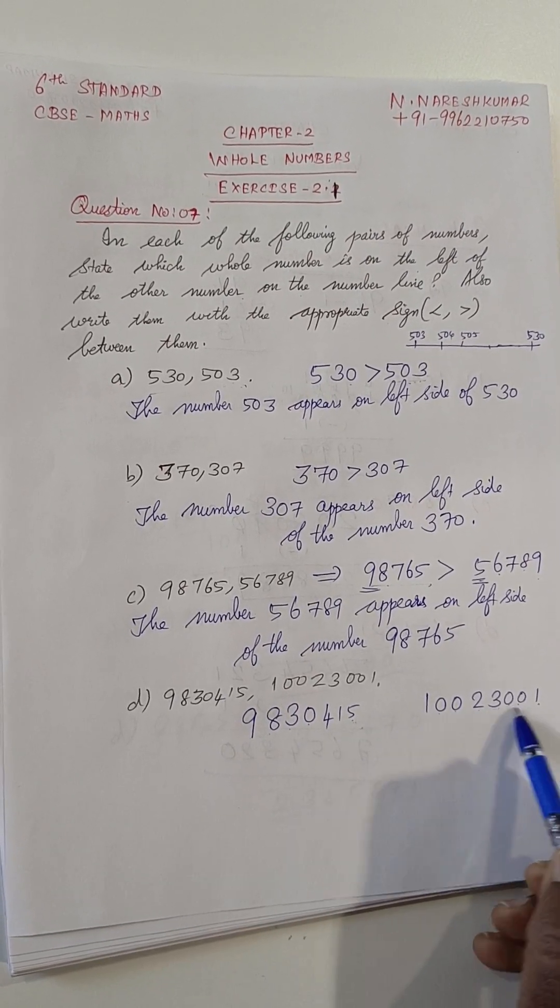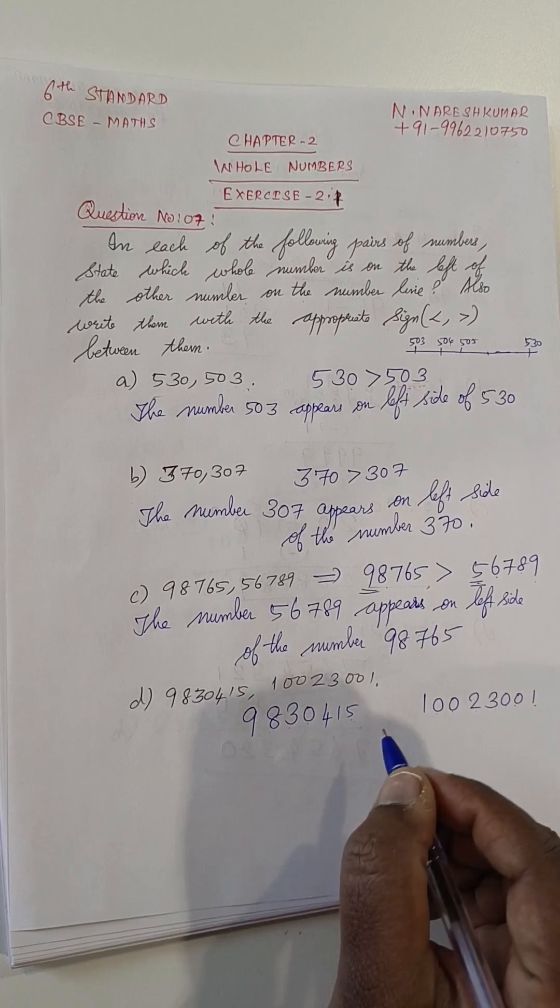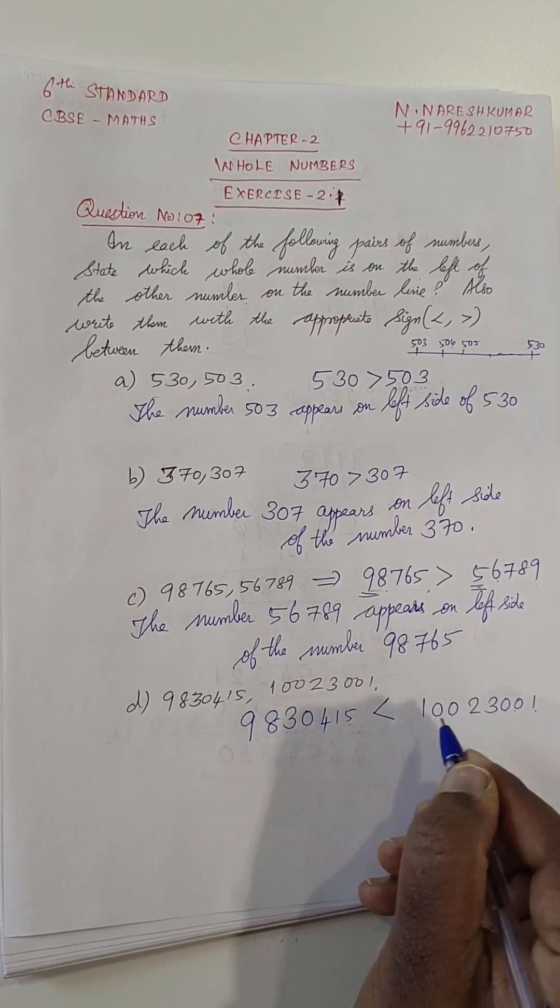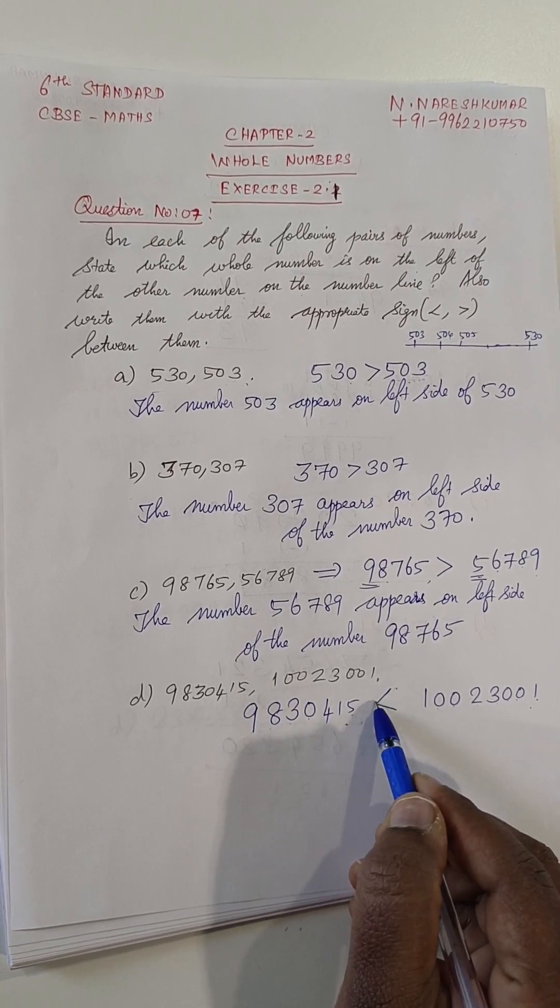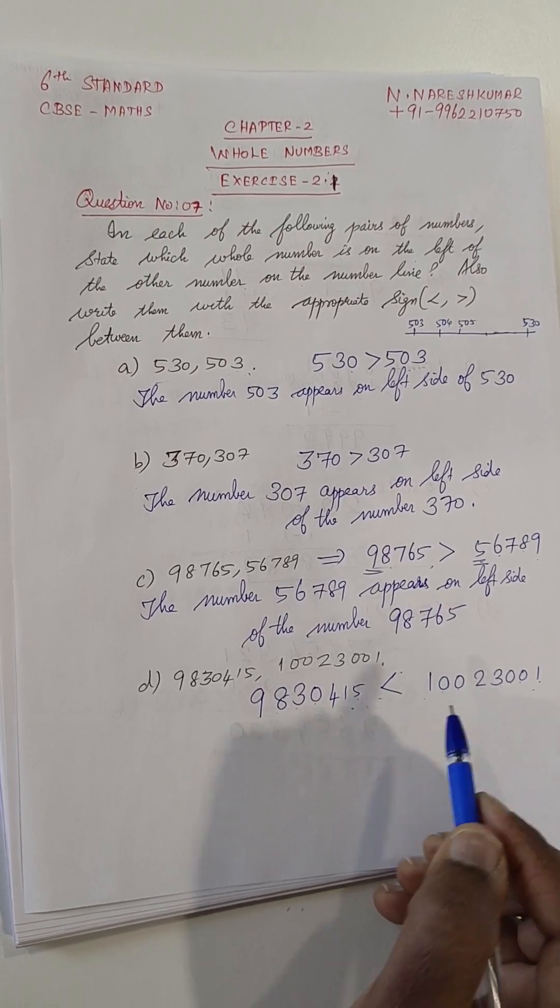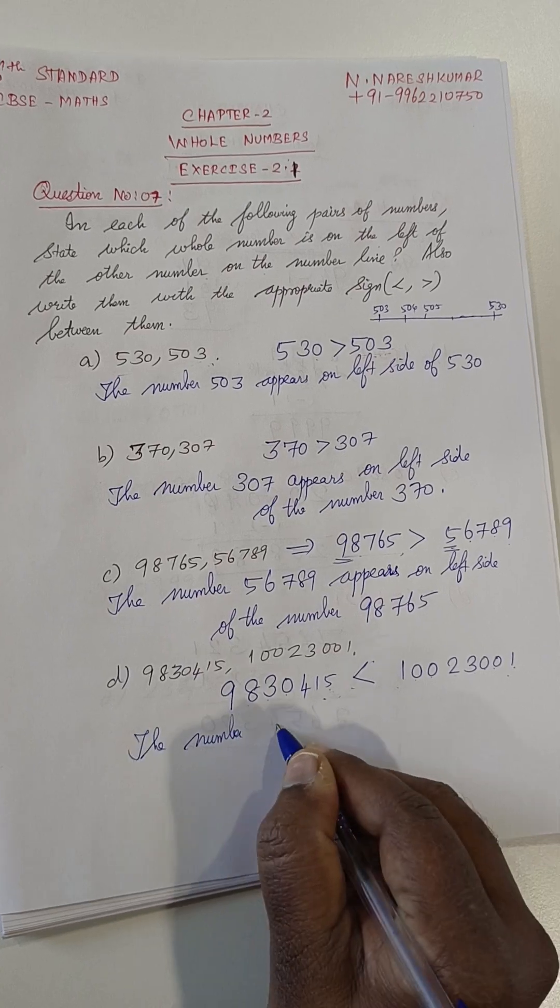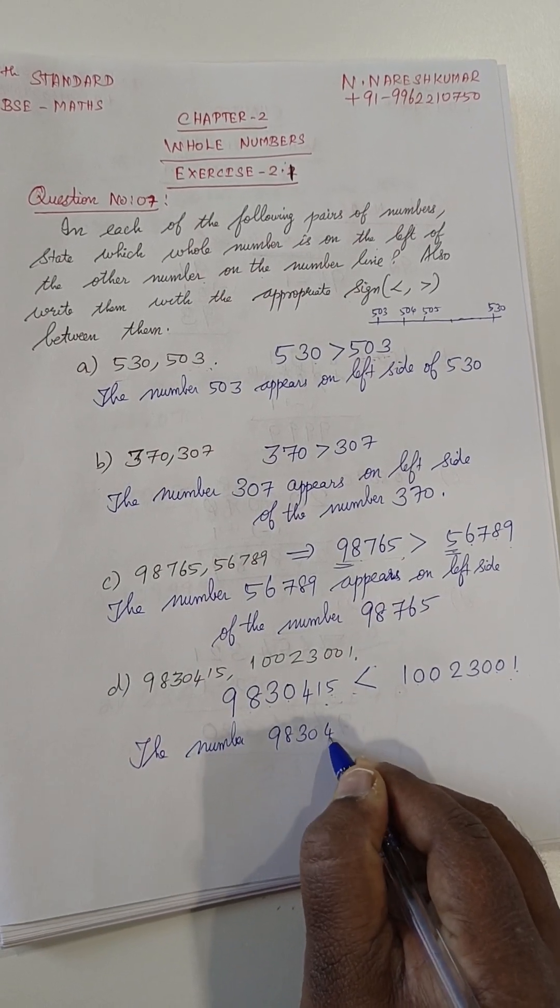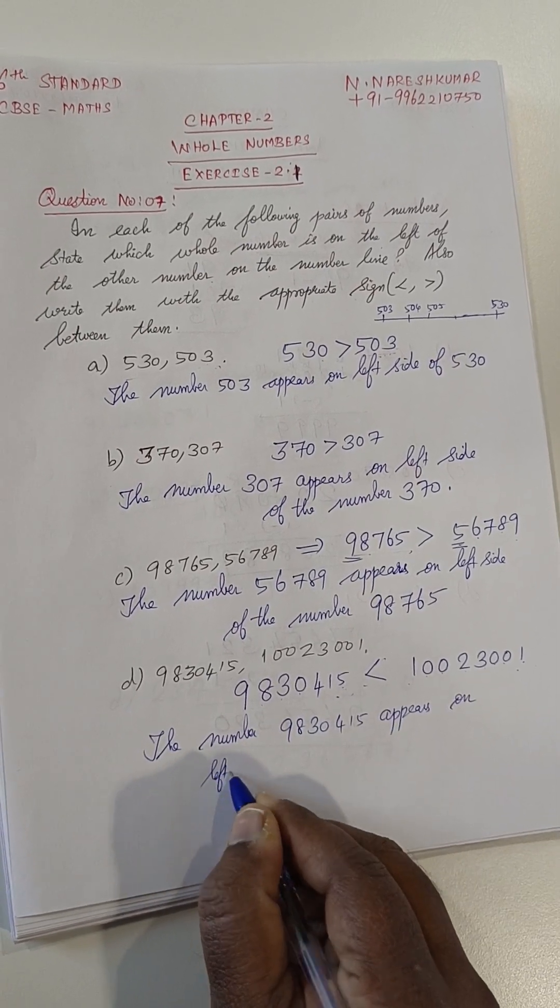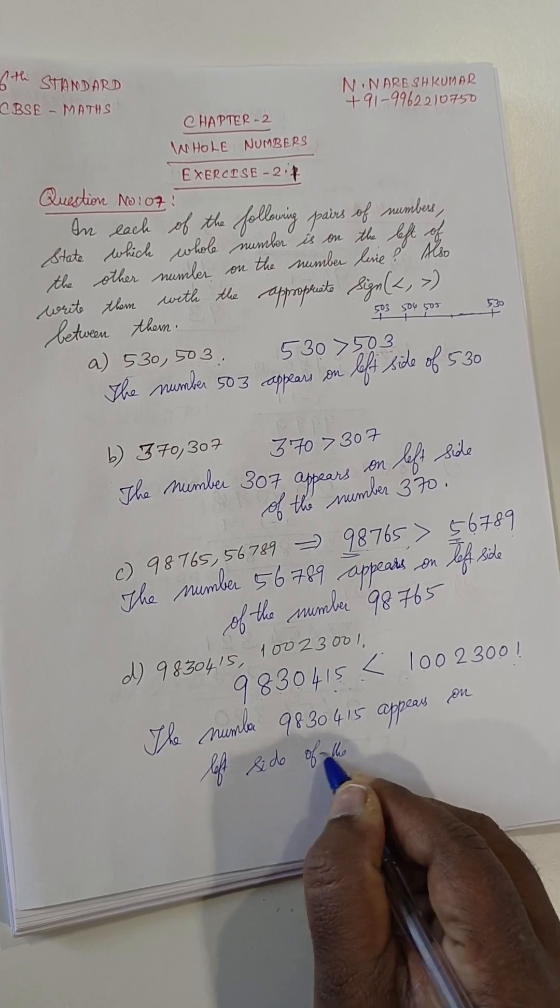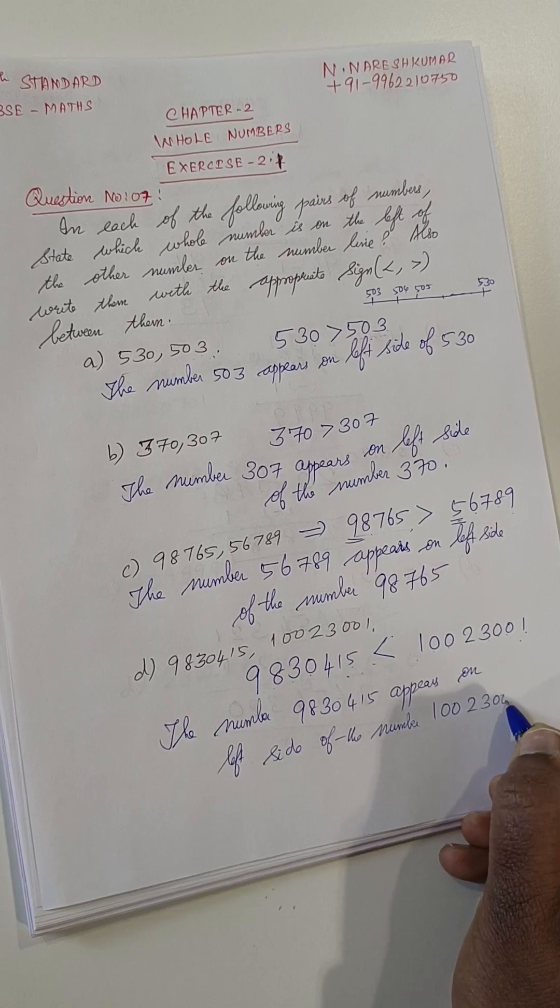So, in this, while comparing with this number, 9830415 is less than this number. That is, this is the biggest number and this is the smallest number. So, we are putting it as less than. So, the number 9830415 appears on the left side of the number 10023001.